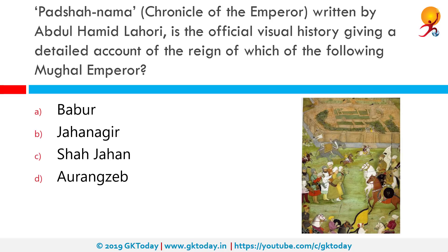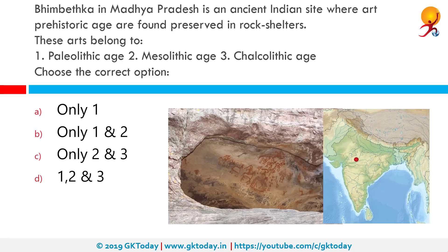Padshahnama, or Chronicles of the Emperor, written by Abdul Hamid Lahori, is the official visual history giving a detailed account of the reign of which Mughal Emperor? The correct answer is Shah Jahan. The Padshahnama is a genre of works written as the official visual history of Mughal Emperor Shah Jahan's reign. The most significant work of this genre was written by Abdul Hamid Lahori in two volumes.